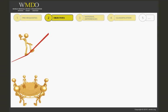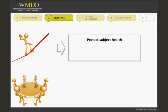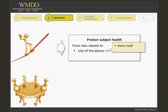There are two main objectives in effective safety reporting during the clinical investigation. One, to protect subjects' health from major risk factors. The first risks are those inherent to the use of the device, which may be related to the device itself and or the procedure involved in using the device. The second risks are those inherent to participation in the clinical investigation.